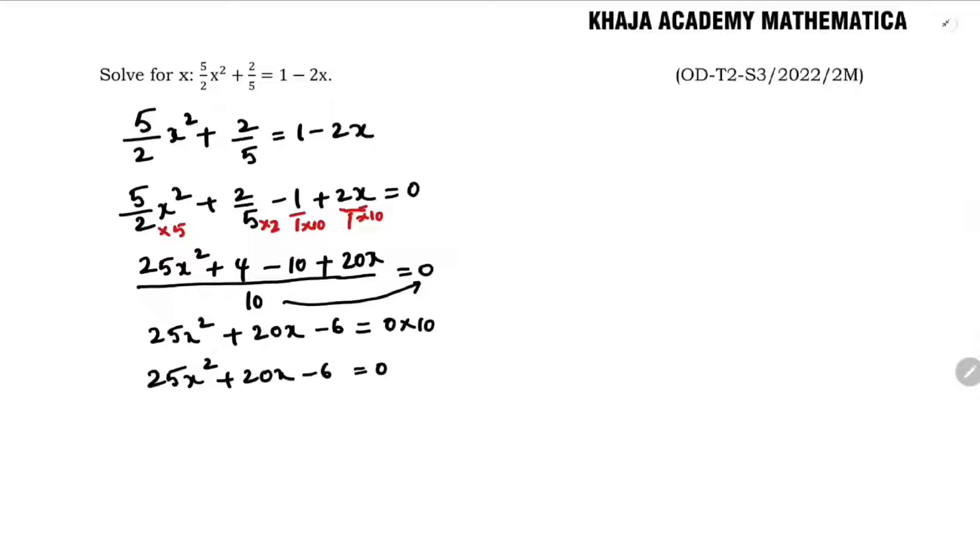Now here, if we will try to split the middle term, 25 times 6 which is 120. So 25 times 6 is 120. So 2 times 60, 2 times 30, 2 times 15 and 3 times 5.